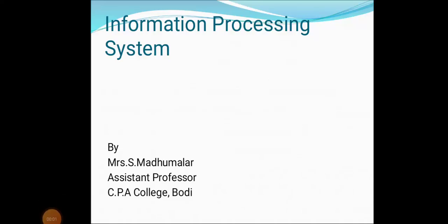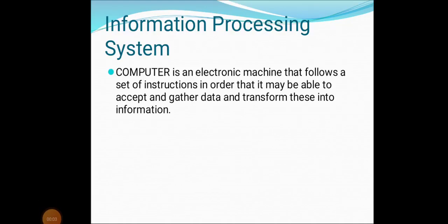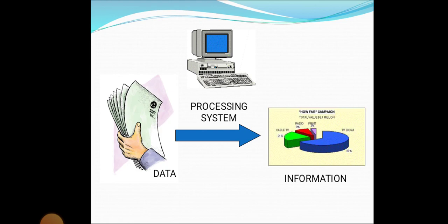Students, today we are going to see about information processing systems. First, we are going to see what is a computer. A computer is an electronic machine that follows a set of instructions in order that it may be able to accept and gather data and transform these into information. So the data will be converted into information.